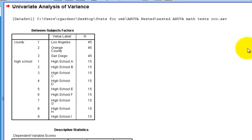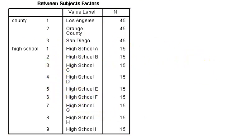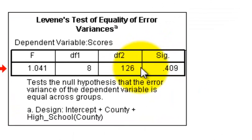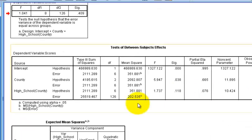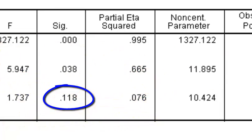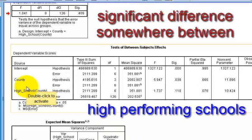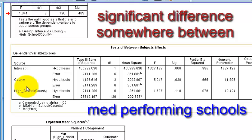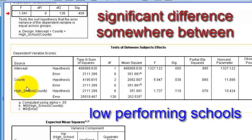Here's the nested design ANOVA output. The first box shows how many per county and per school, your descriptive statistics, means, and standard deviations. Scanning the means, Orange County looks much higher than the others. Levene's test shows we did not violate the assumption of homogeneity of variance. The key results box shows a significant difference between the counties, but not from the high schools. In other words, there was a significant difference between the high-performing schools across counties, and between the medium-performing schools, and between the low-performing schools — those paired schools are what's being tested.